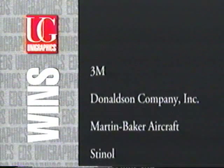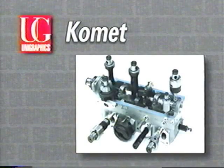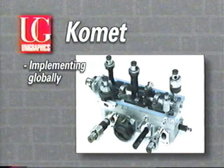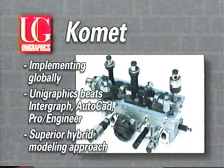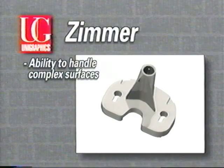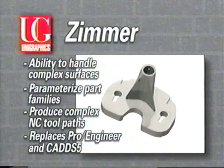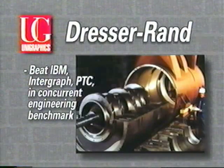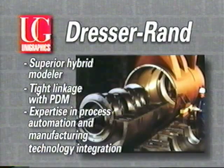And more and more companies are choosing the power of Unigraphics over the competition. Comed of America is a 75-year-old global manufacturer of modular metal cutting tools implementing Unigraphics globally. The company chose UG after evaluating Intergraph, AutoCAD, and ProEngineer — Unigraphics' hybrid modeling approach proved superior to first-generation parametric systems. At Zimmer, a division of Bristol-Myers Squibb, Unigraphics' ability to handle complex surface geometry, parameterize complex part families, and produce sophisticated NC tool paths caused Zimmer to replace their old ProEngineer and CADS-5 systems. And at Dresser-Rand, Unigraphics beat IBM, Intergraph, and Parametric Technology in a benchmark focusing on concurrent engineering using a master model approach. Dresser-Rand noted UG's superior hybrid modeler, its tight linkage with PDM, and a demonstrated expertise in process automation and manufacturing technology integration our competitors did not possess.